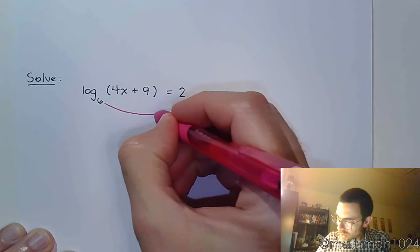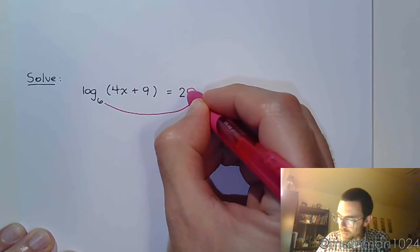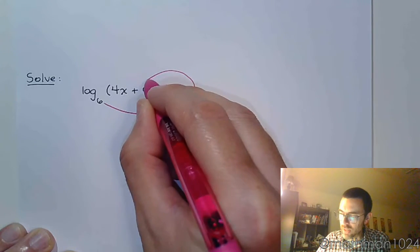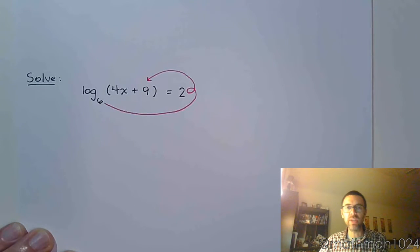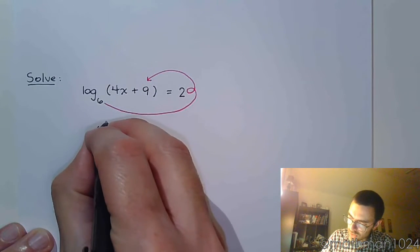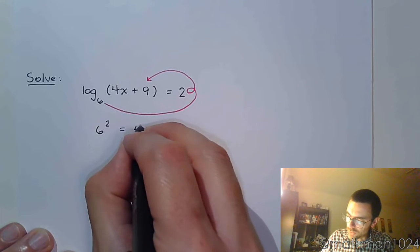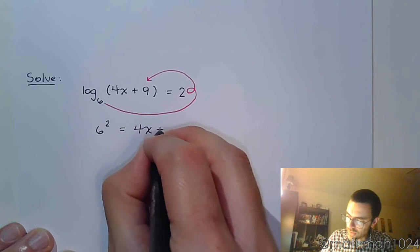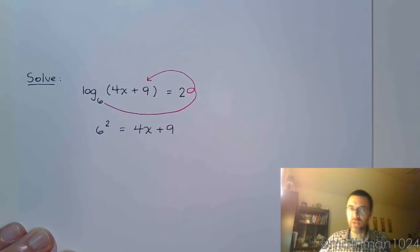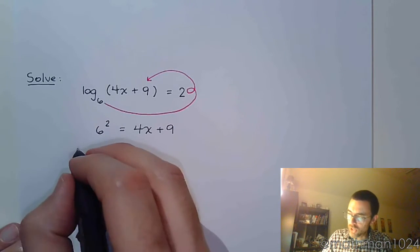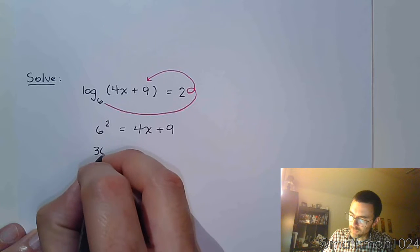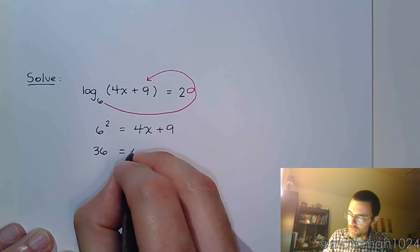You take 6 raised to the power, because that's the answer to the log, and it's supposed to equal what's on the inside. So we rewrite this as 6 squared, and that equals 4x plus 9. Remember that's 6 squared, not 6 times 2. So when you work this out, we've got 36 is equal to 4x plus 9.